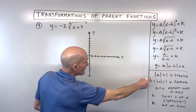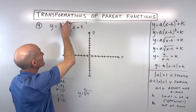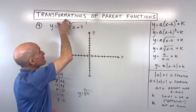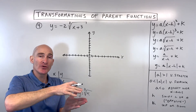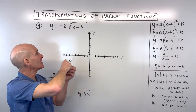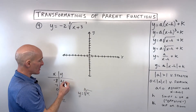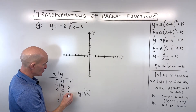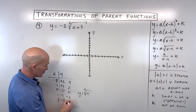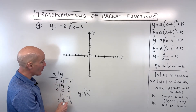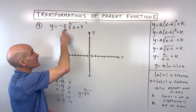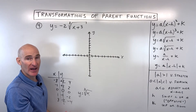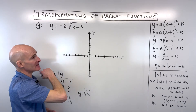The 2: take the absolute value of the A value, which is positive 2 — greater than 1, so it's a vertical stretch. Multiply all y values by 2, giving 4, 2, 0, -2, -4. You could combine the negative and the 2 and just multiply by -2 all at once — same result. I just did it in steps.